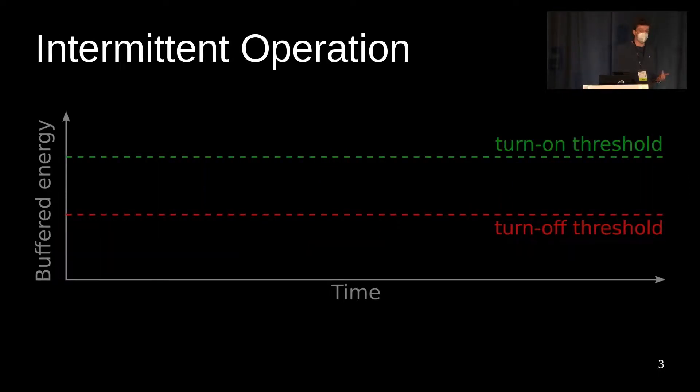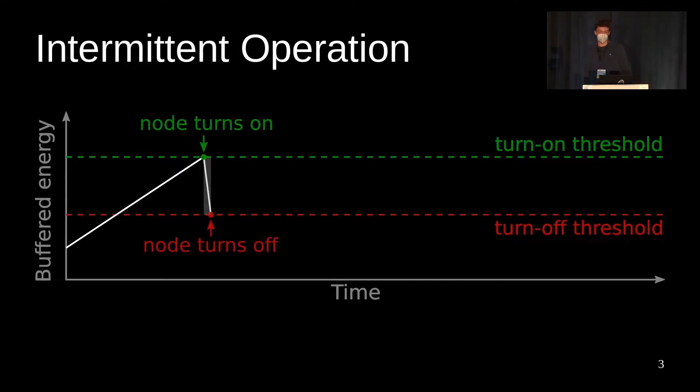However, because of low energy availability and low storage capacity, battery-free devices operate intermittently. That means that the devices are forced to remain inactive for most of the time charging their energy storage. Once they reach a turn-on threshold, they become active and start to operate, quickly draining their energy storage before being forced to shut off again. This leads to the typical intermittent execution pattern where devices operate for a short time before being forced to recharge again.